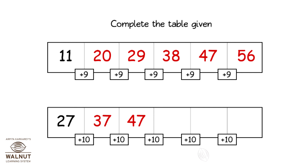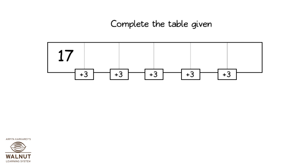Complete the table given. Starting at seventeen, skip count by three: seventeen, twenty, twenty-three, twenty-six, twenty-nine, and thirty-two.